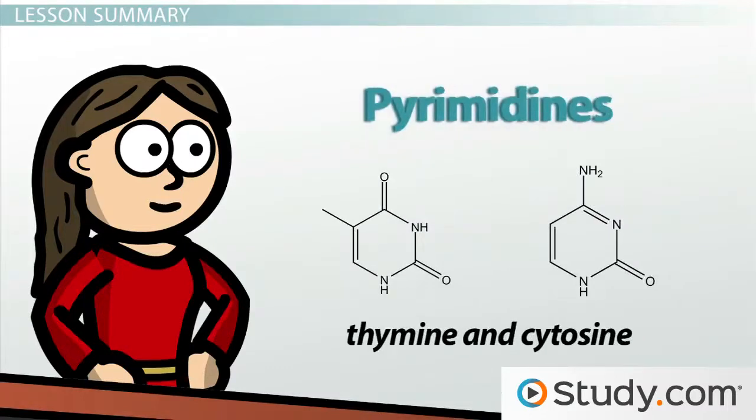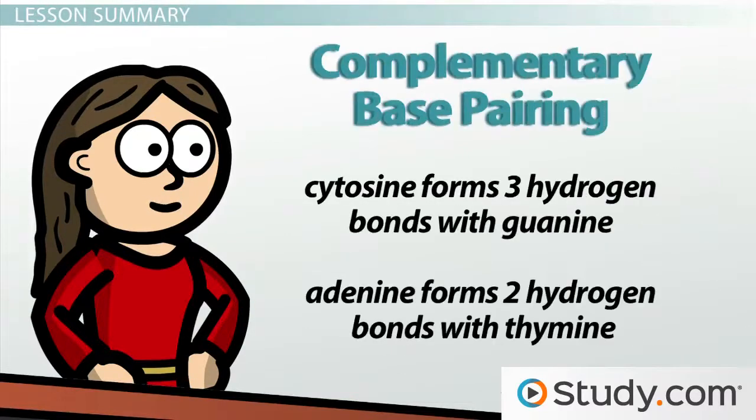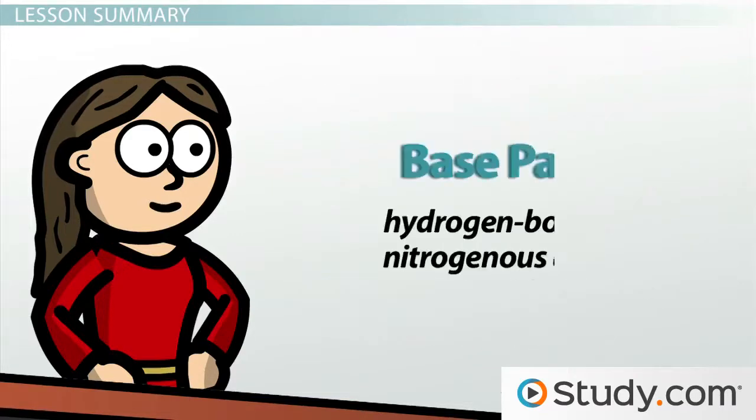Thymine and cytosine are called pyrimidines. Adenine and guanine are called purines. Each nucleotide base can hydrogen bond with a specific partner base in a process known as complementary base pairing. Cytosine forms three hydrogen bonds with guanine. Adenine forms two hydrogen bonds with thymine. These hydrogen bonded nitrogenous bases are often referred to as base pairs.